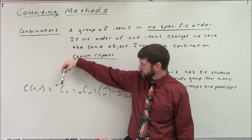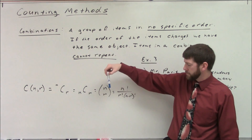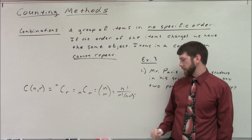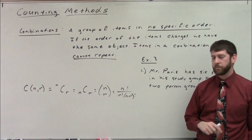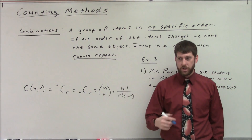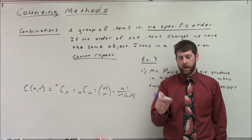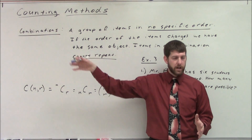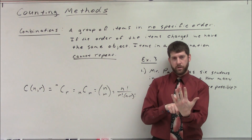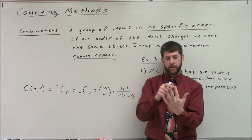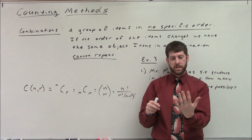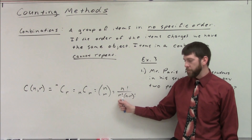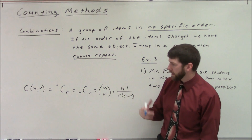We write it as nCr. The formula is n factorial over (n minus r) factorial times r factorial. What we're actually doing is: a permutation counts all the ways to rearrange items into subgroups, and a combination divides out all those repeated groupings. If I have groups of five, every time I rearrange those five I get a new permutation — the combination divides out all those rearrangements using r factorial, leaving only the distinct groups.